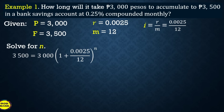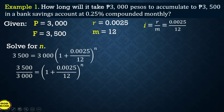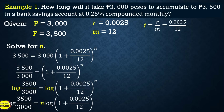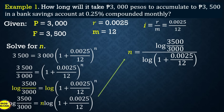Solving for n, substitute into the formula: 3,500 = 3,000 × (1 + 0.0025/12)^n. Divide both sides by 3,000: 3,500/3,000 = (1 + 0.0025/12)^n. Apply logarithm to both sides using the power property: log(3,500/3,000) = n × log(1 + 0.0025/12). Then divide both sides by log(1 + 0.0025/12) to isolate n.